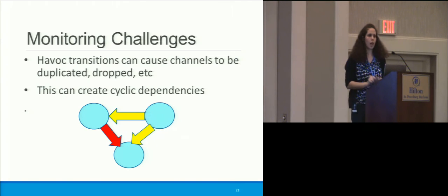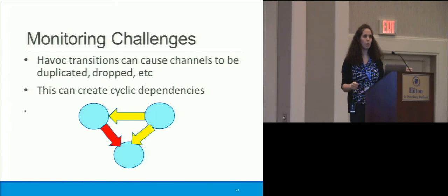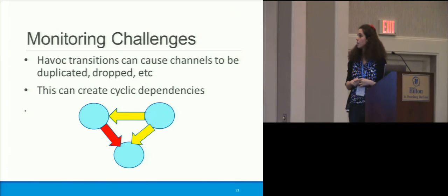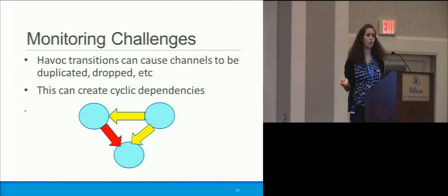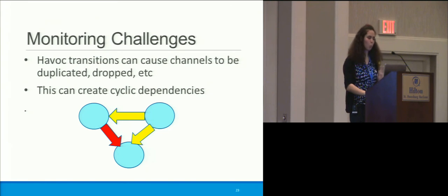What are the monitoring challenges? We have the linearity constraint — each channel connects exactly two processes. But when we have havoc transitions, all of that breaks down. We can have channels be dropped or duplicated, and we get very ugly situations. The main problem is we can get cyclic dependencies. Processes spawning processes are shown as yellow arrows — those are reasonable. But a red arrow that creates a cycle is bad. Cycles are hard to monitor, hard to blame, and they're part of what makes this work challenging.